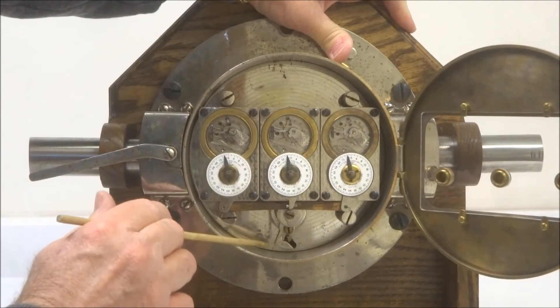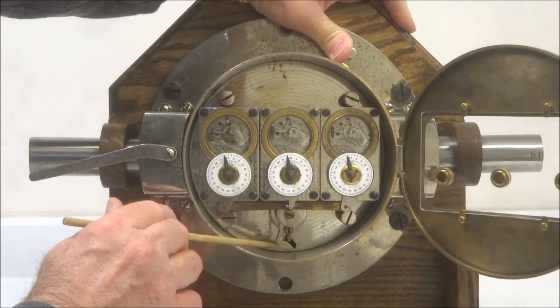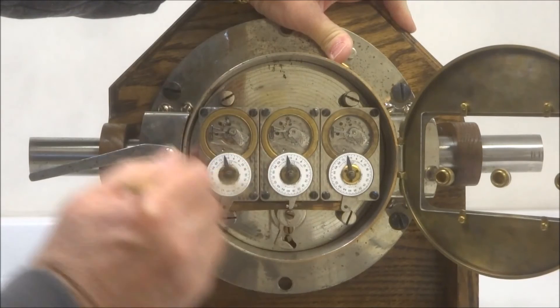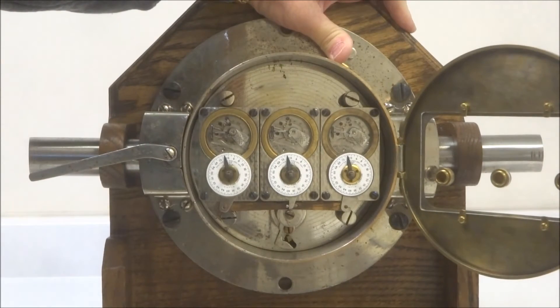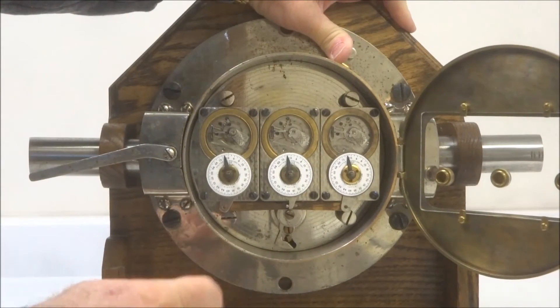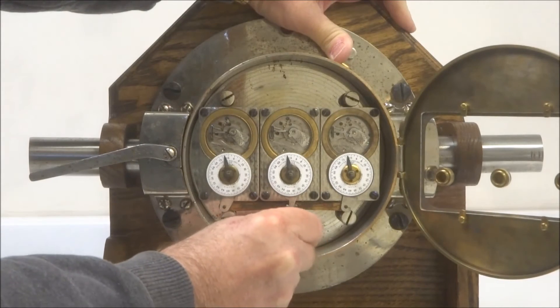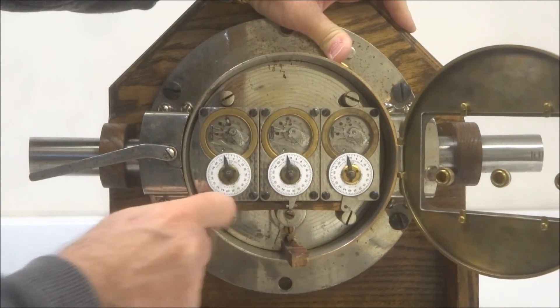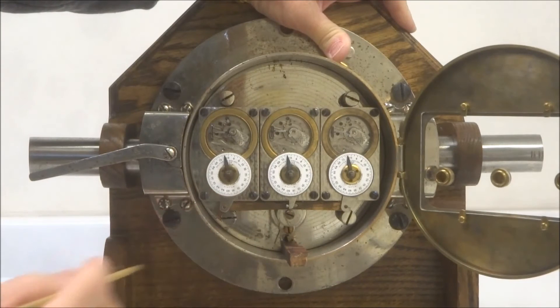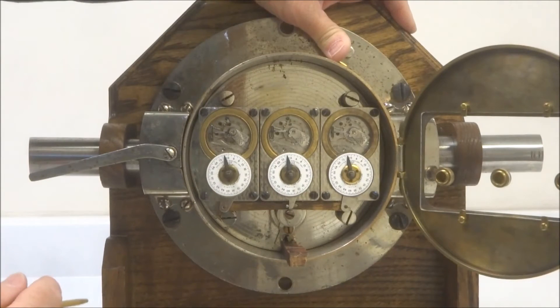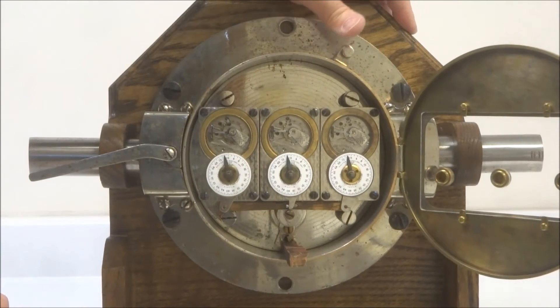That pin would then be caught by this lever here if these movements were wound. Now right now they are not wound because if they were, I would not be able to do this demonstration because this lever would already be engaged.